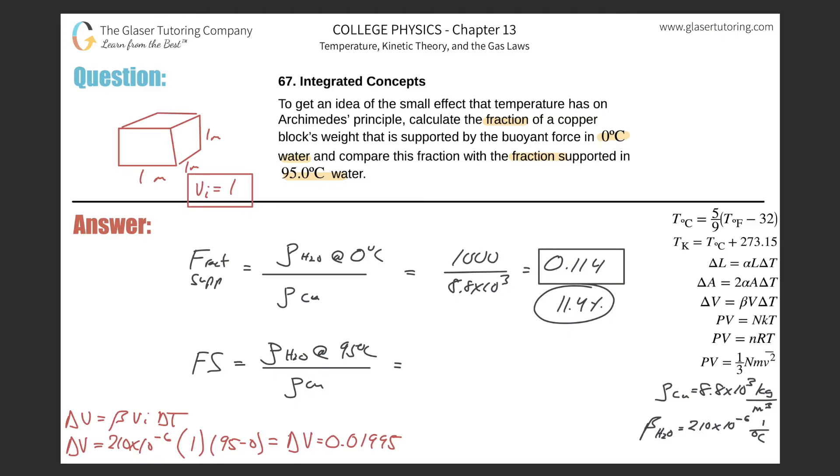So here now, the change in volume is going to be 0.01995. In other words, if this is the volume I started with, then the final volume would have been one, the original, plus the change of 0.01995. In other words, the final volume is 1.01995.